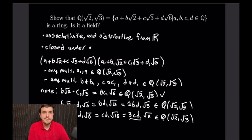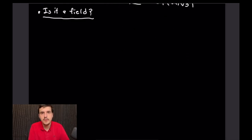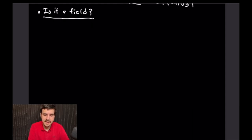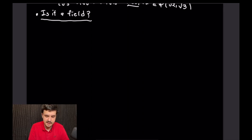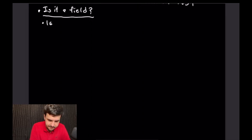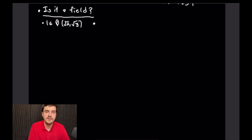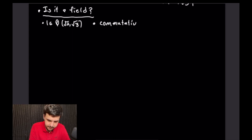Now let's check if it's a field. We need a multiplicative identity, commutativity of multiplication, and multiplicative inverses for every element. The number 1 is in the ring (set a=1, b=c=d=0, all rational). Multiplication is commutative, inherited from ℝ.